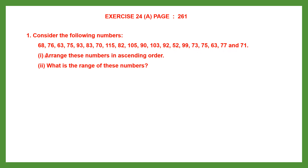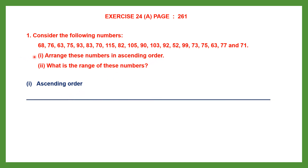The first question says arrange these numbers in ascending order. So we're going to arrange these numbers in ascending order. Ascending means from small to big, so we need to look out for the smallest number.